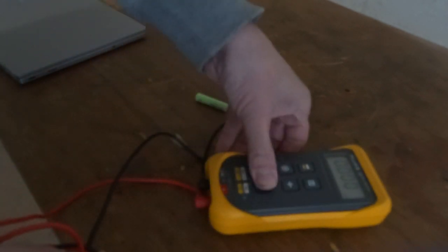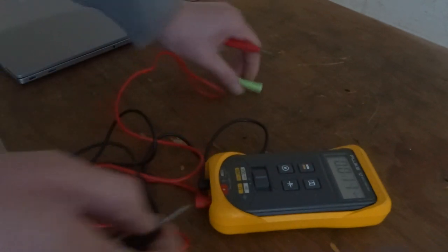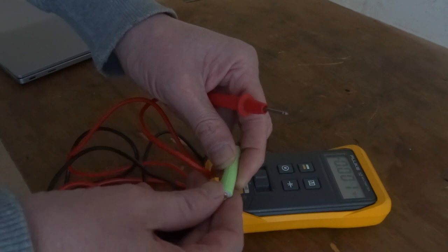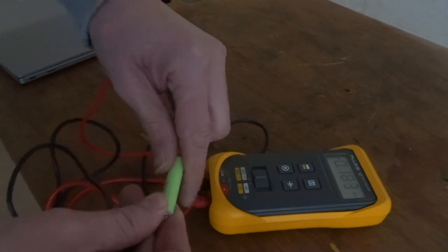That's volts DC. So super fast for solar readings.